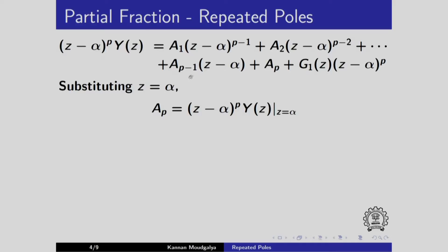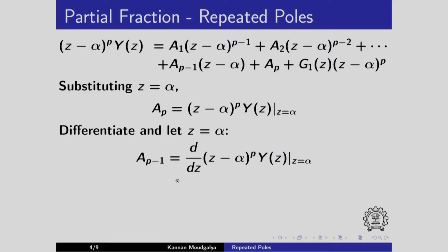To find a_(p-1), we differentiate both sides with respect to z. After differentiating, the term with (z minus alpha)^(p-2) will still have a factor of (z minus alpha), so substituting z equals alpha makes it zero. Similarly, all terms vanish except the one giving a_(p-1). Thus a_(p-1) is the derivative of this expression with respect to z, evaluated at z equals alpha.